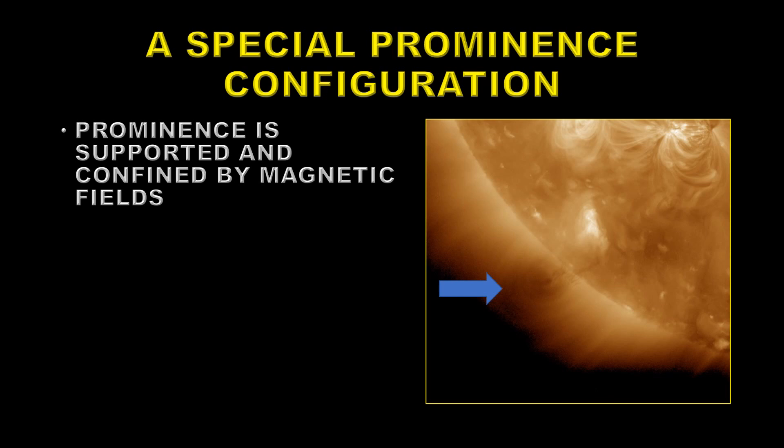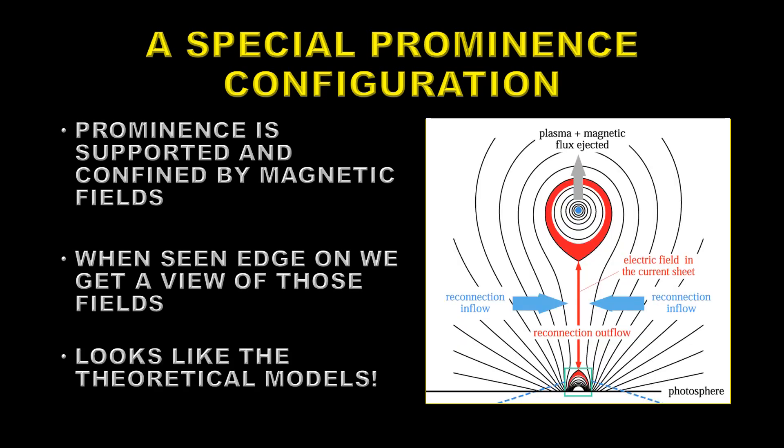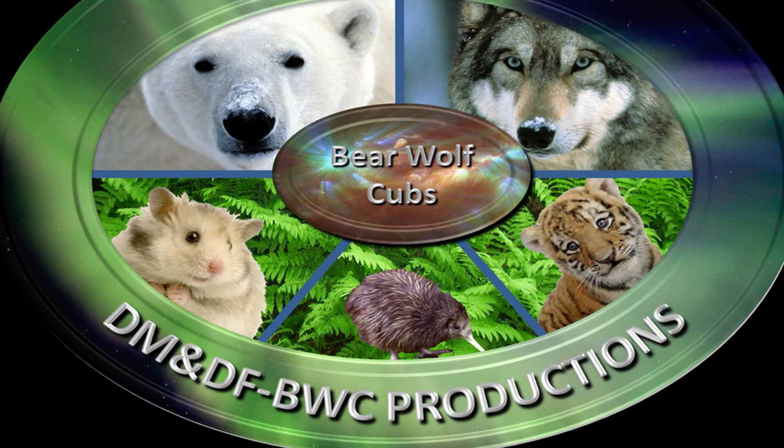Hot plasma cannot cross magnetic field lines. When you see a prominence edge on, like here, you get a view of the configuration of those magnetic fields, and it looks very much like the theoretical models that people come up with for prominences. You can see that large cavity above the surface shown in red — that's called a coronal cavity. It's empty of hot coronal plasma, so all you can see is the dark feature which is absorbing any of the light from the corona behind it. That's it for today — until next time, stay safe and goodbye.